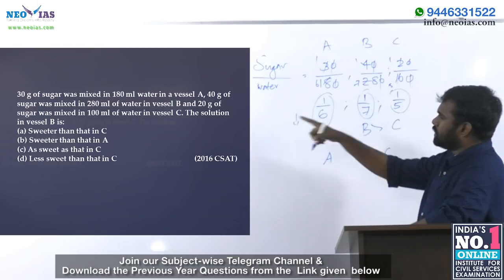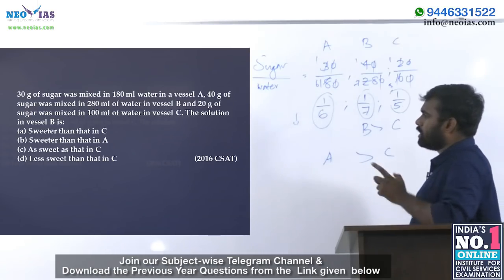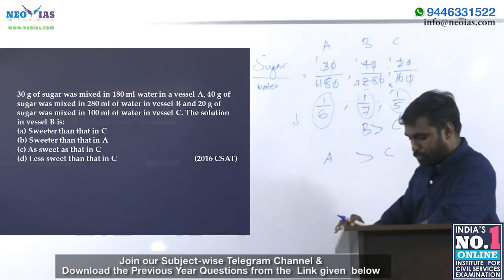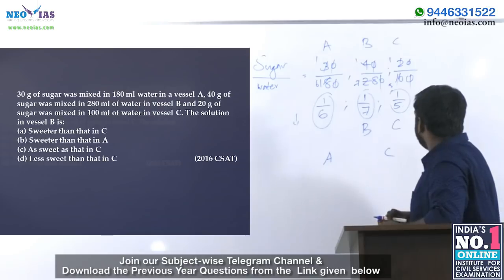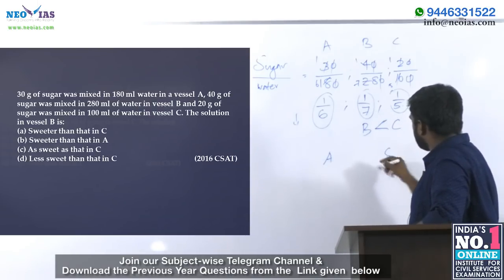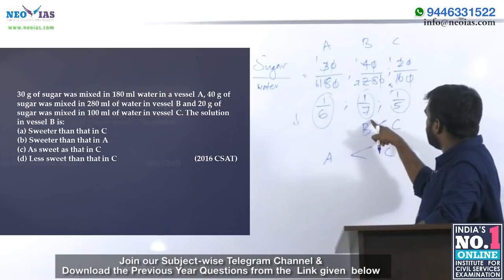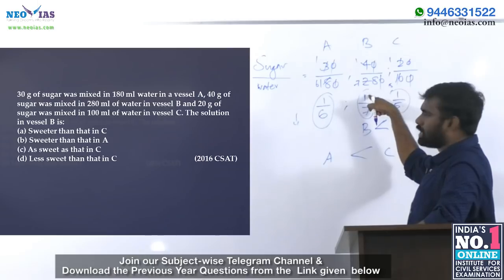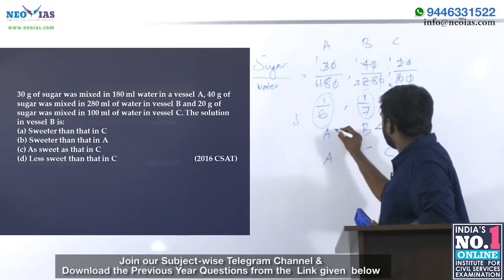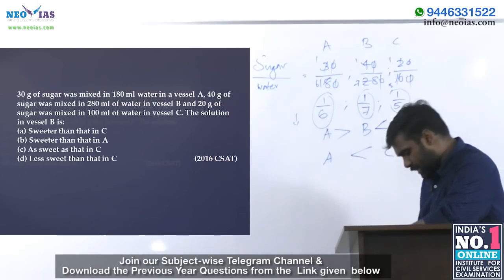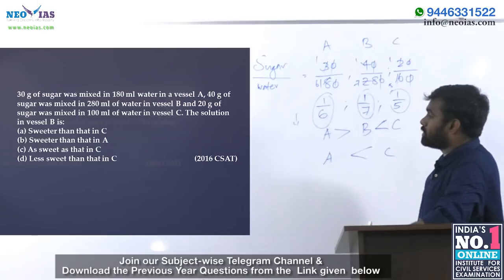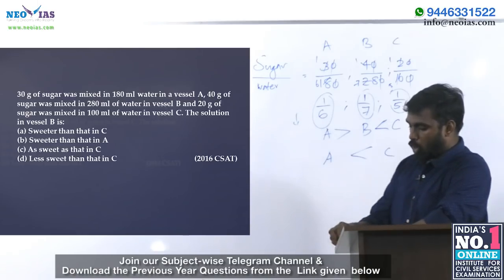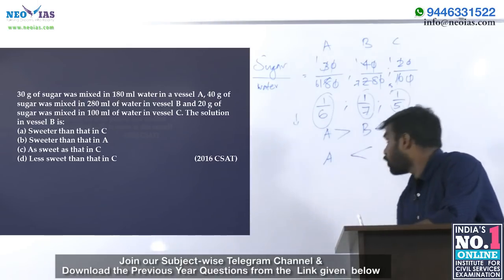So C is sweeter than both A and B, and A is sweeter than B. Therefore B is the least sweet mixture. The question asks about the relation between vessels B and C — B is less sweet than C. Option D is the answer.